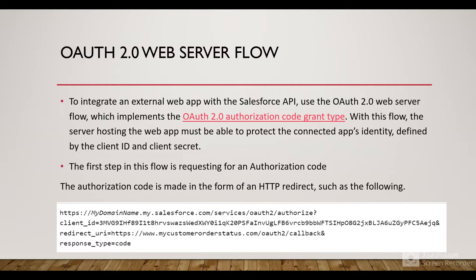To integrate an external web app with the Salesforce API, use the OAuth 2.0 web server flow, which implements the OAuth 2.0 authorization code grant type. With this flow, the server hosting the web app must be able to protect the connected app identity defined by the client ID and the client secret. First, you create a connected app in your Salesforce org. The connected app handles incoming requests from external applications and has a consumer ID and consumer secret.